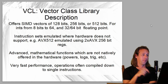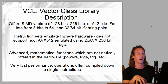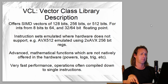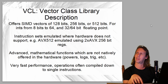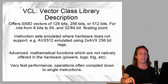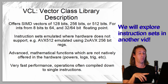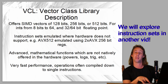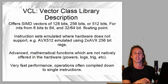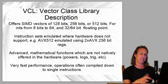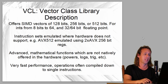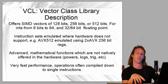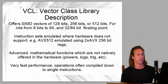A rundown of the Vector Class Library: VCL offers SIMD vectors of 128 bits, 256 bits, and 512 bits. It offers integers from 8-bit bytes all the way up to 64-bit long longs, or quad words. It also offers IEEE floating point values - 32-bit floats and 64-bit doubles. Instruction sets will be emulated where they're not available in hardware, so if you've only got AVX2 your hardware can still emulate AVX512. VCL also offers a lot of advanced mathematical functions like powers, logs, and trig functions - optimized routines that are often compiled down to single instructions, just like intrinsics or assembly.